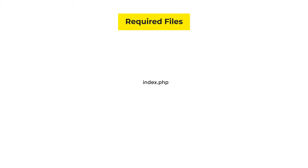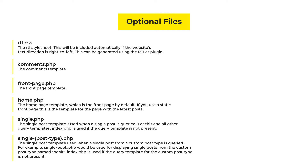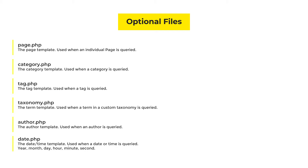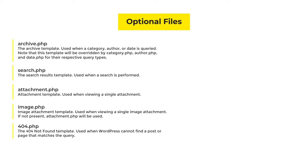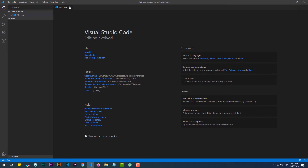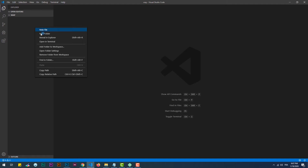Technically speaking, a theme requires only two files to work: index.php and style.css. However, there are a lot of other files that are predefined by WordPress — here is the list. That being said, let's create the index.php file.